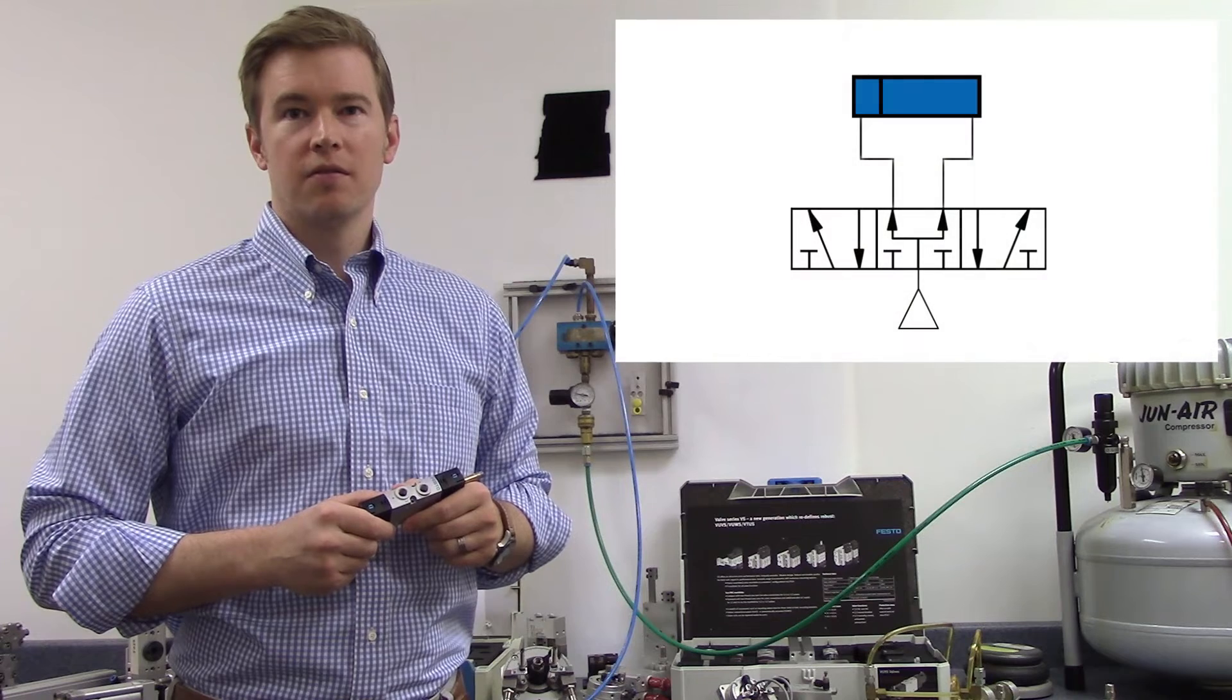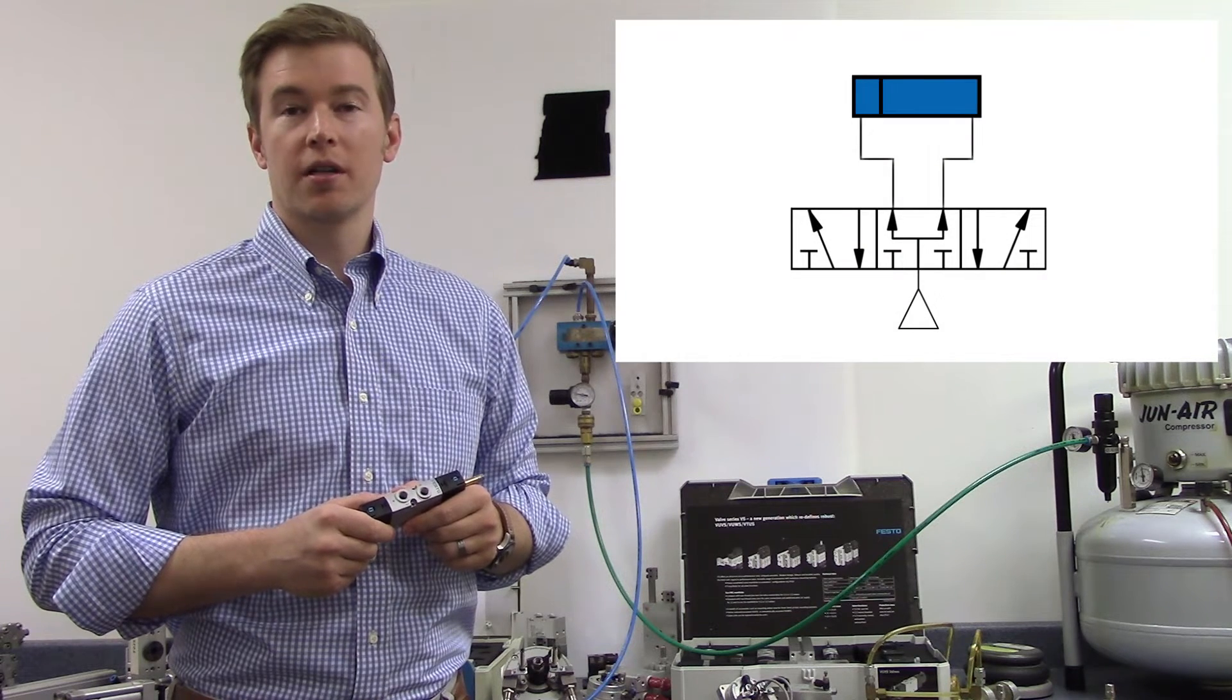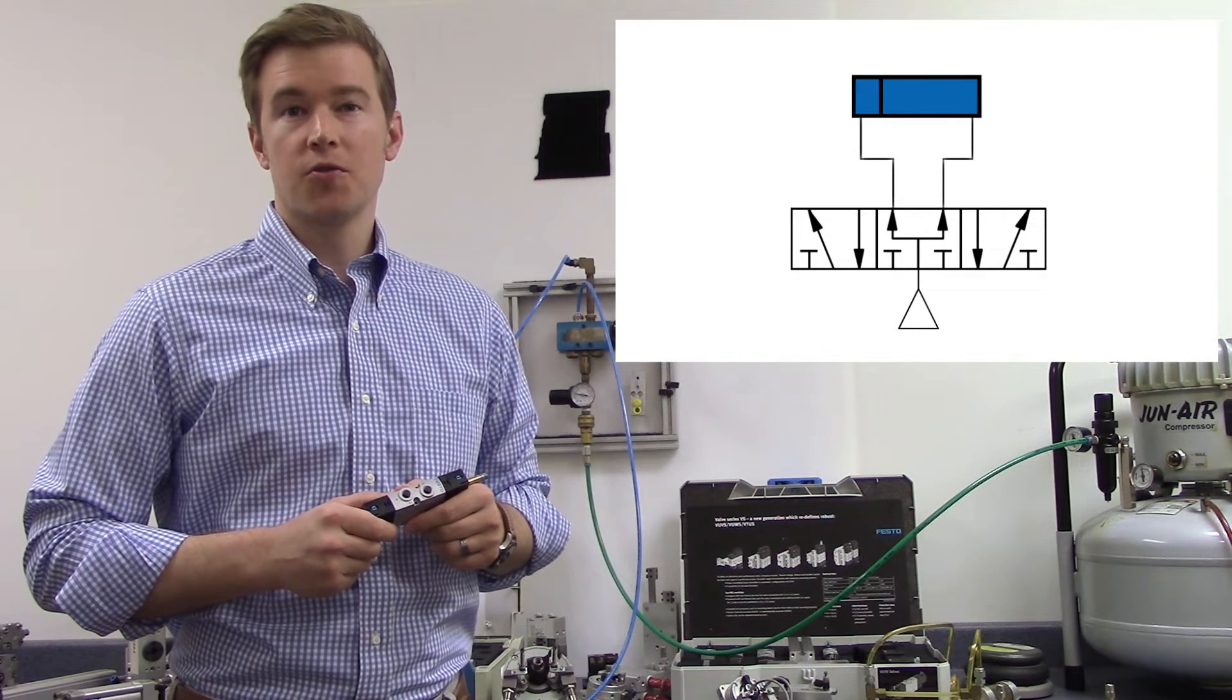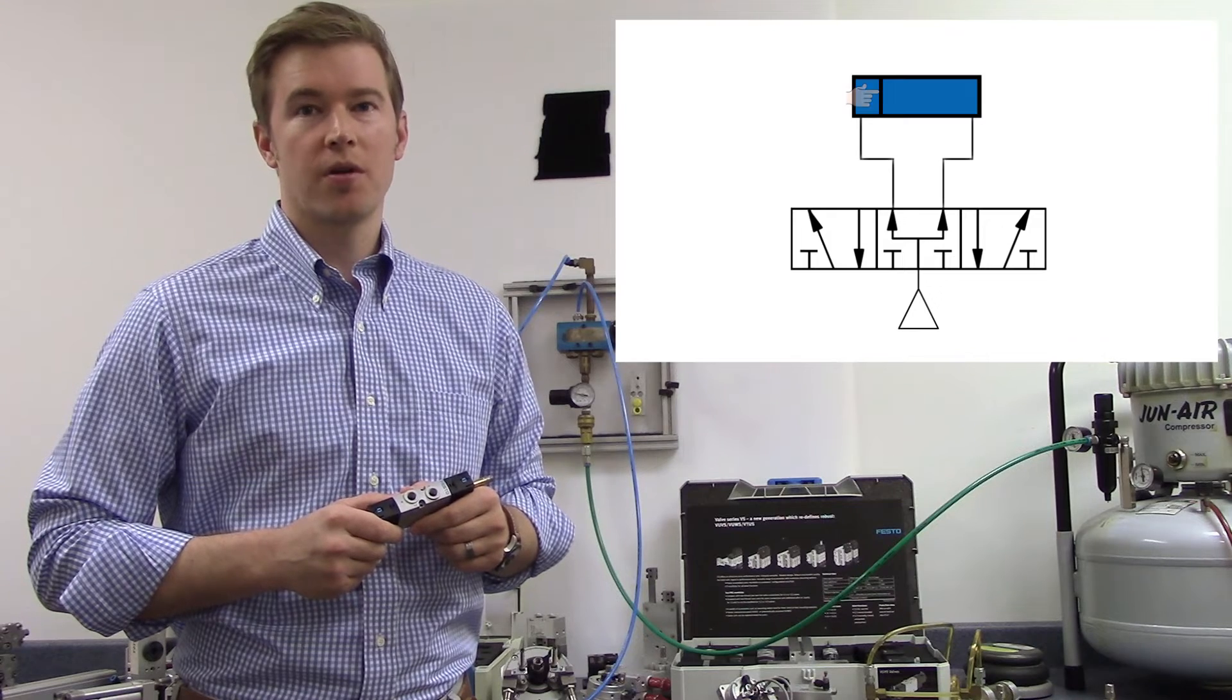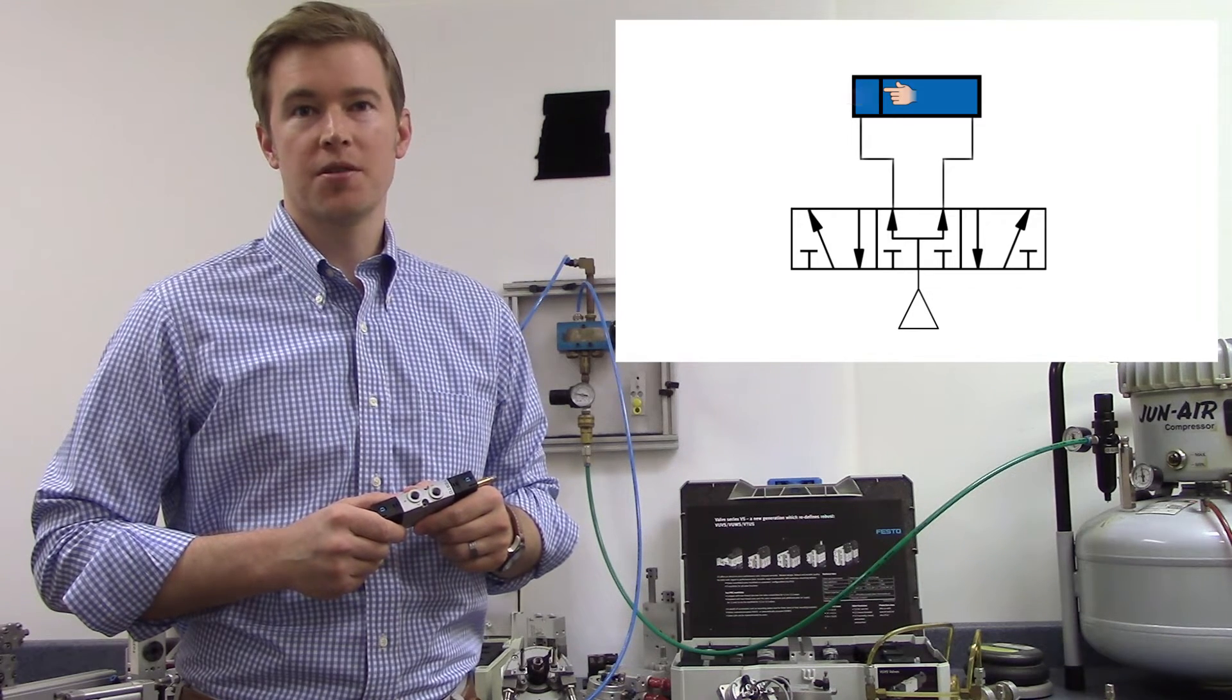In a middle position pressurized valve, only the supply port and the working lines are left open. This is useful for holding rodless or rotary actuators in place as both sides of the piston or vane remain pressurized.